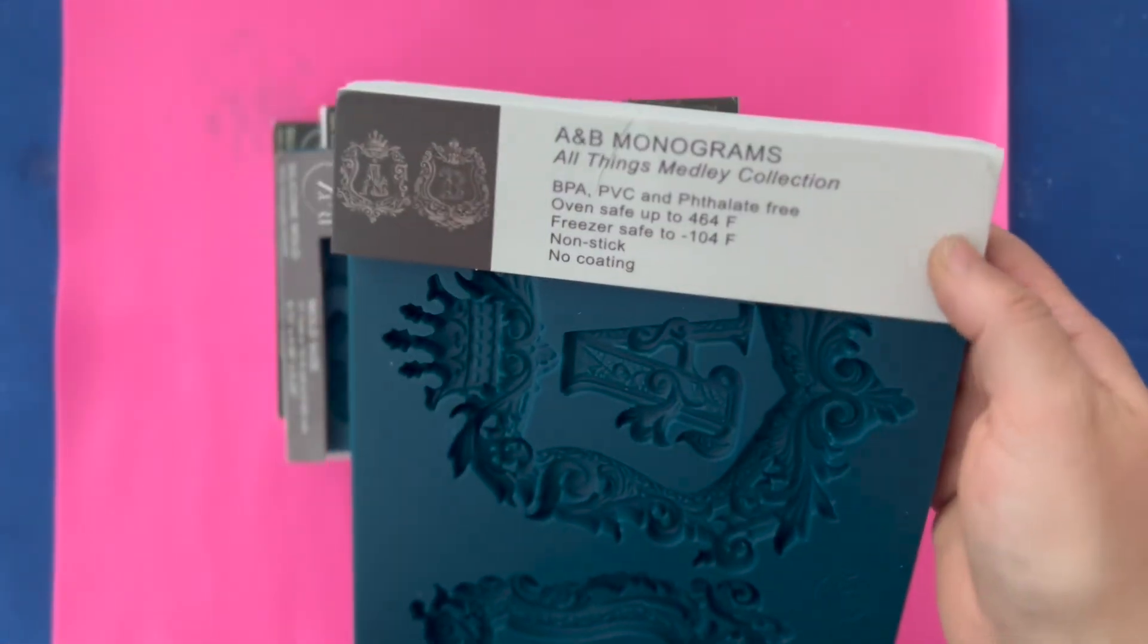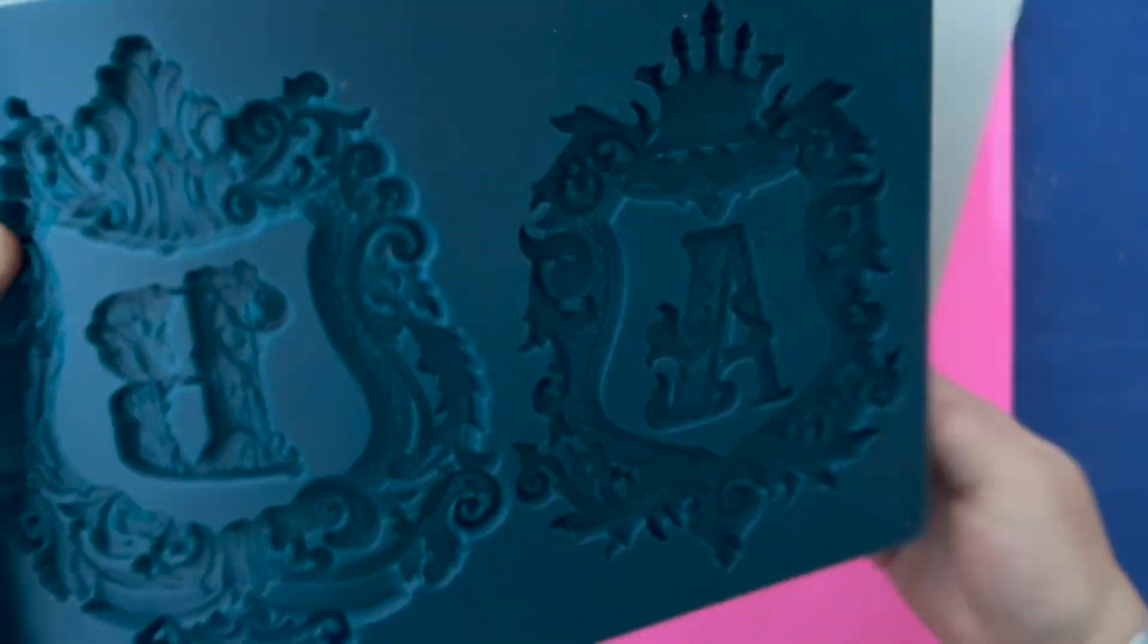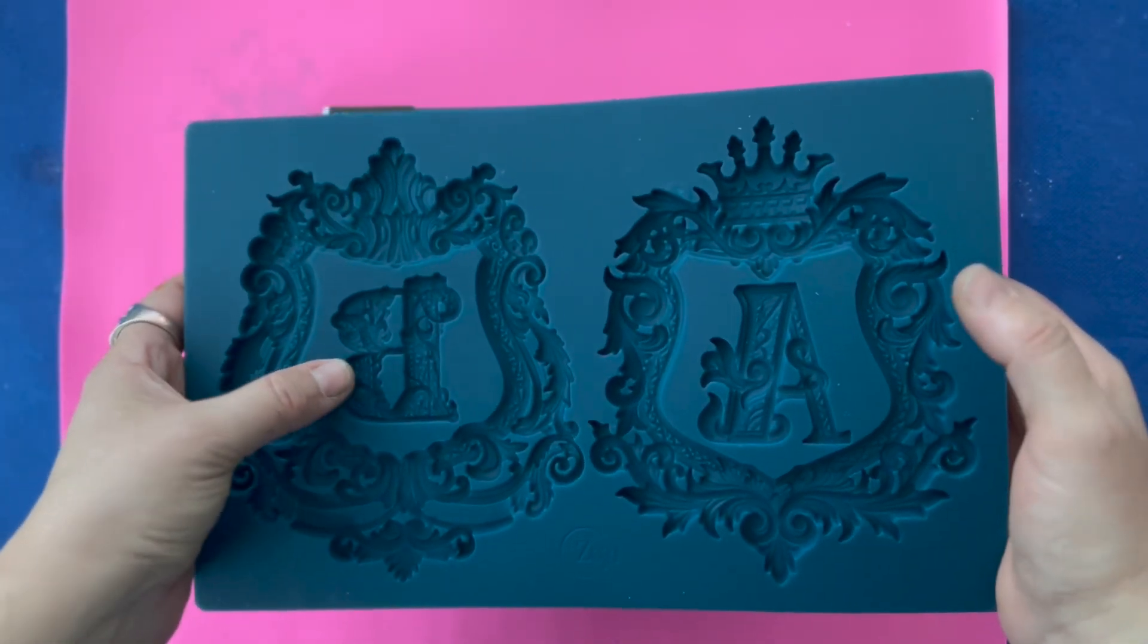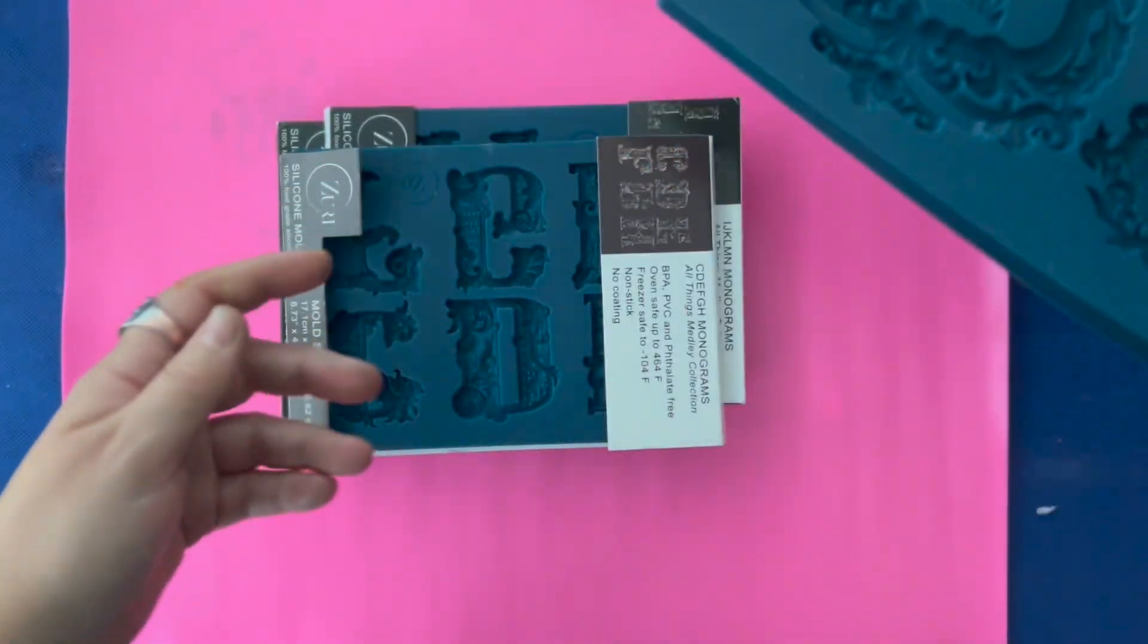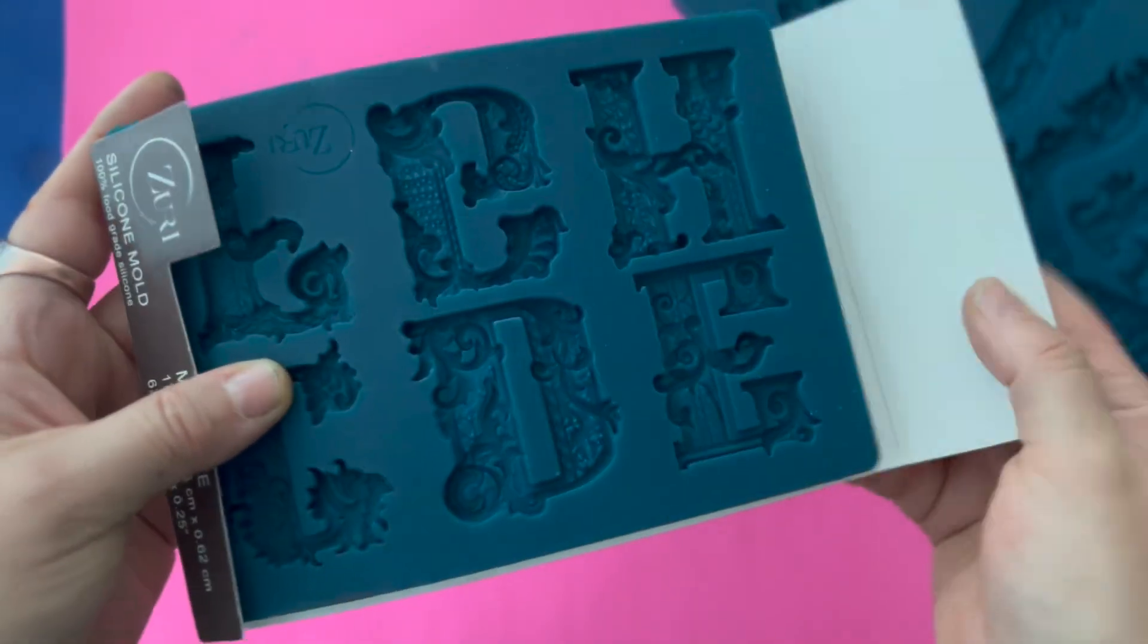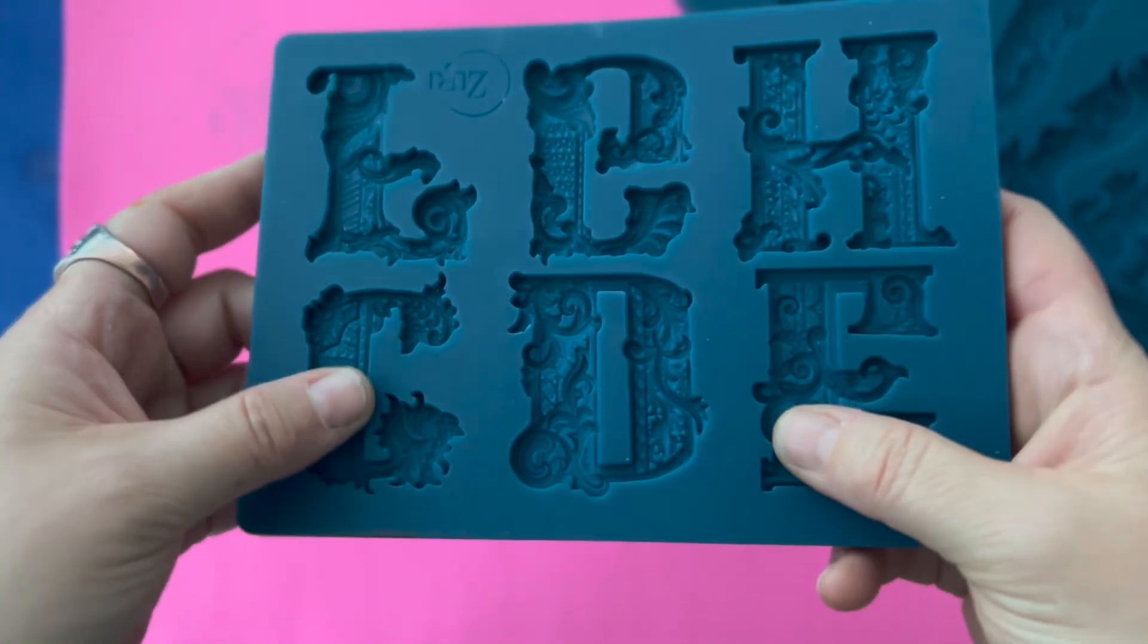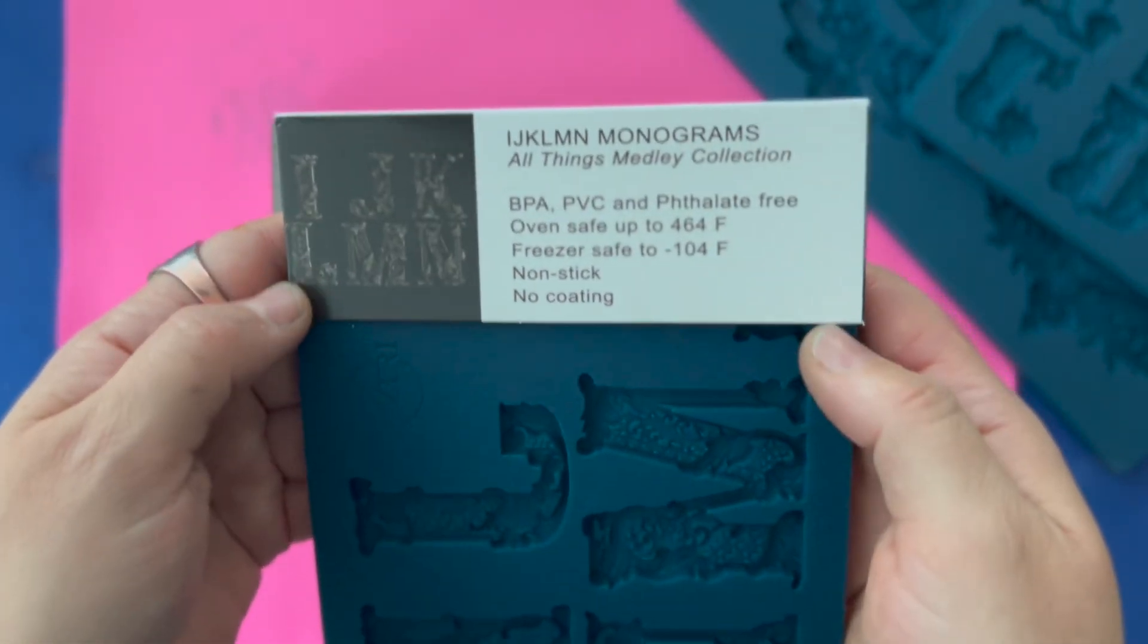Using my monogram set, these monogram sets are letters A and B and as you can see they have a surrounding frame. You can put any letter inside of these frames and they're beautiful. Then we're moving on to set C to H and you can see the mold sizes here. The letters are just magical. Zuri designs made this collection from all things medley and the letter monograms are gorgeous.